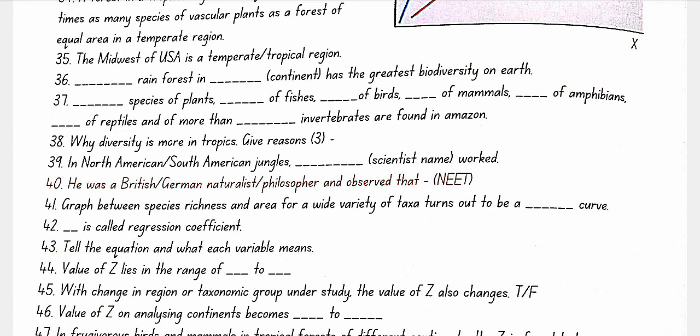Alexander von Humboldt, a German naturalist, worked in South American jungles. He observed that species richness increased with increase in explored area, but only up to a certain limit. Reasons for more diversity in tropics: tropical environments have not undergone glaciation, are less seasonal, and receive more solar energy.